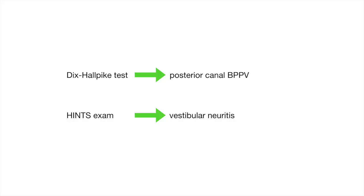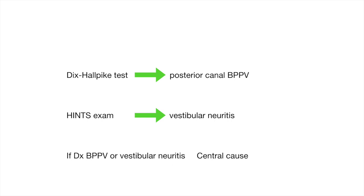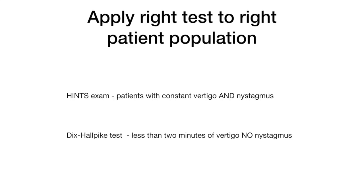The Dix-Hallpike test and the HINTS exam are powerful bedside examination techniques which, when applied correctly, can be used to definitively diagnose the most common peripheral causes of vertigo. The Dix-Hallpike test rules in posterior canal BPPV, and the HINTS exam rules in vestibular neuritis. If you can do that, you can basically rule out a dangerous cause of vertigo.